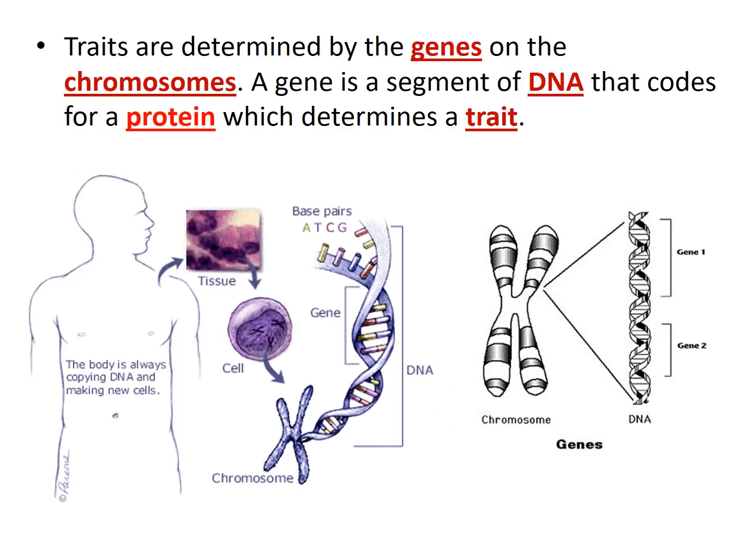Genes are on chromosomes. Chromosomes contain multiple genes, and a gene is just a segment of DNA that codes for a protein which determines a trait. Different proteins carry out different roles that result in visible traits.